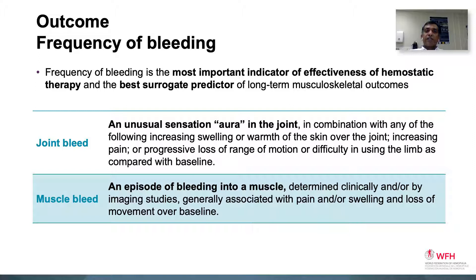The Scientific and Standardization Committee of the ISTH defined a joint bleed as an unusual sensation or aura in the joint, usually perceived by the patient, in combination with increasing swelling or warmth of the skin over the joint, increasing pain, progressive loss of range of movement, or difficulty in using the limb compared with the baseline.